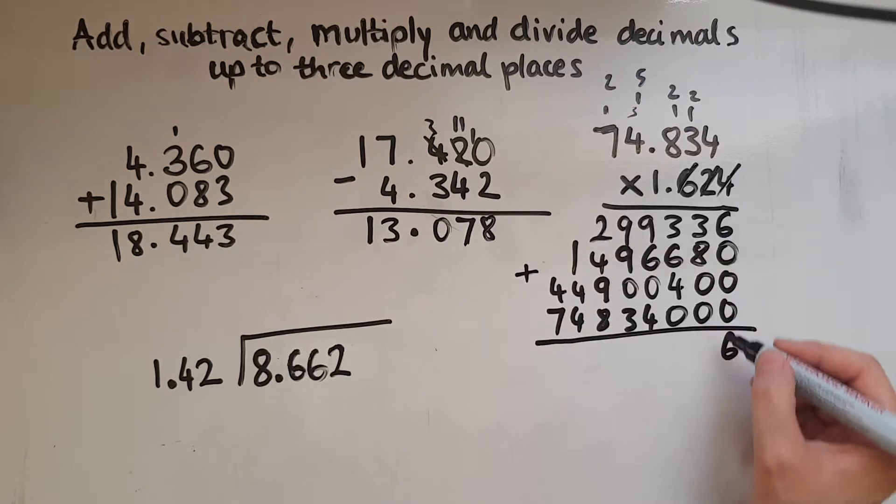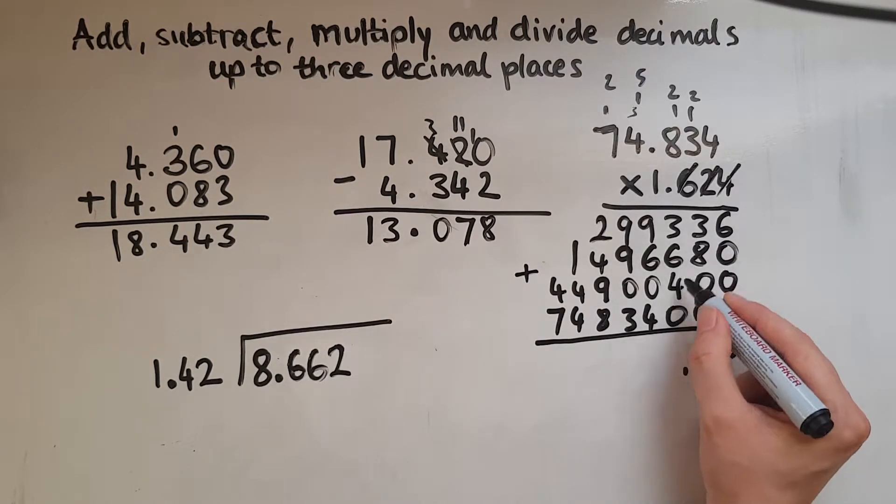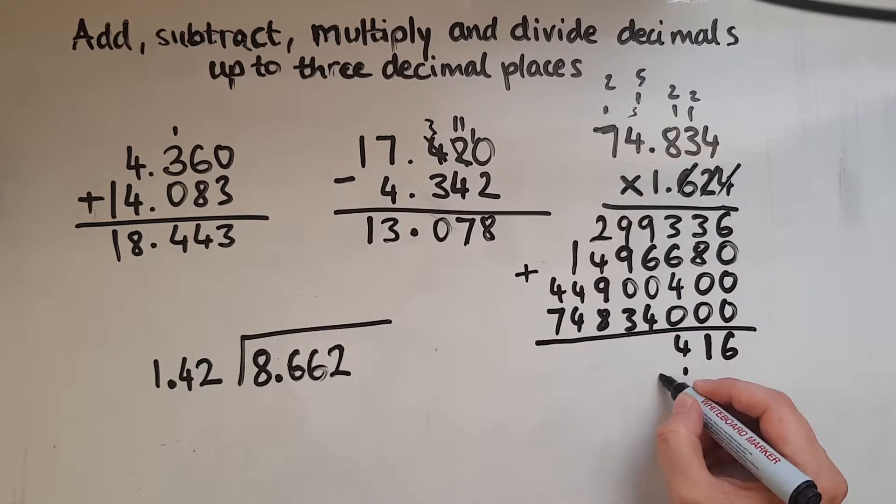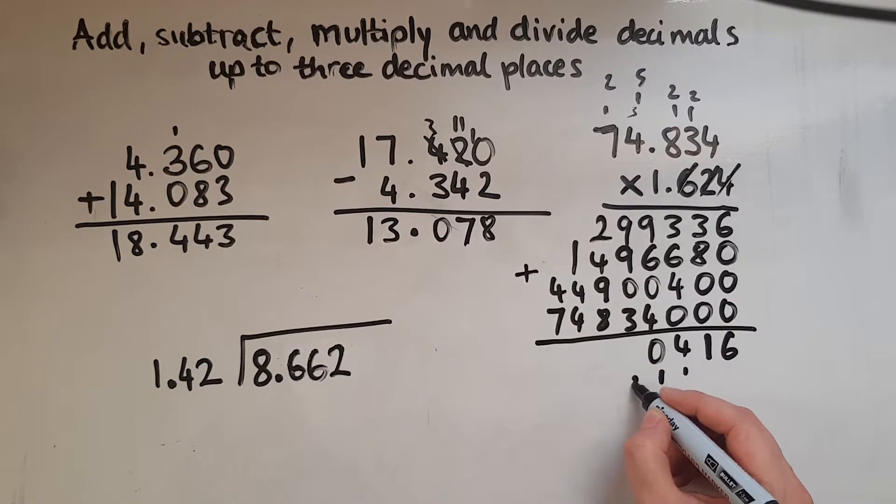So we've got 6 here. We've got 11. So 1 carried over. 10, 13, 14, 10, 19, and the 1, 20. So it's 2.